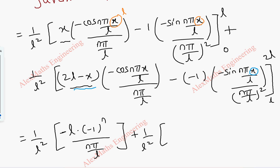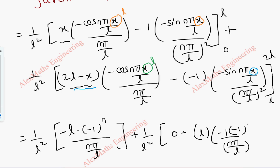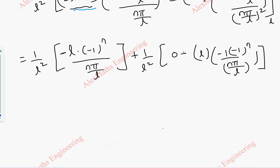At the lower limit x = L for the second integral: (2L − L) = L, and cos(nπ) = (−1)ⁿ after L cancels. There are two minus signs so we get plus (−1)ⁿ by (nπ/L). After cancelling L squared terms, we have −(−1)ⁿ by nπ plus (−1)ⁿ by nπ. These are equal and opposite in sign, so they cancel, giving bₙ = 0.